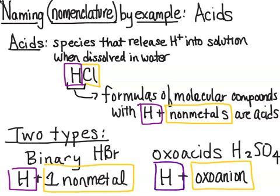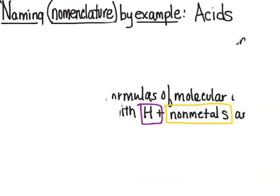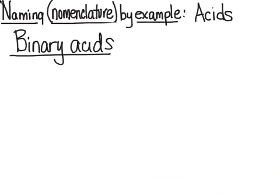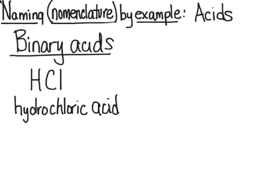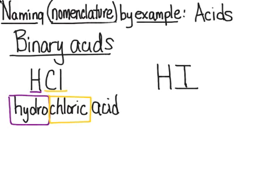So let's look at naming these two types of acids. Let's start with binary acids. HCl is our first, so let's look at that name, hydrochloric acid. So there are two pieces. Hydro, that stands for the hydrogen, and chloric, which stands for the chlorine.